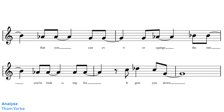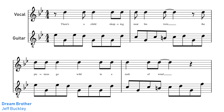Analysed by Thom Yorke is in C-Phrygian Dominant. In this passage, we can see all of the character notes of Phrygian Dominant. Phrygian Dominant is exactly the same as the major scale, however it has a flat 6, flat 7, and flat 2. Dream Brother by Jeff Buckley is in G-Phrygian Dominant.